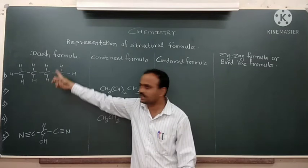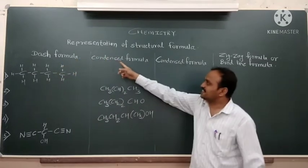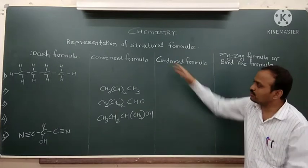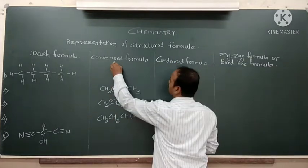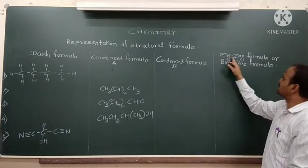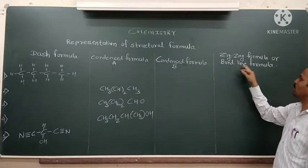For example, we have different types or different ways of representation. That is dash formula or complete structural formula, expanded formula we can say. Second is condensed formula. Again condensed formula, we can say condensed formula A, condensed formula B. Last is zigzag formula or bond line formula.